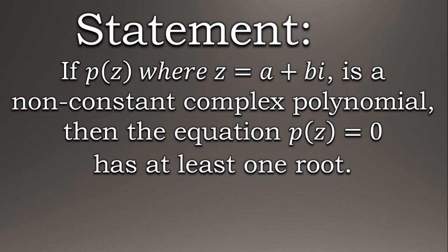Alright, so the fundamental theorem of algebra states that if we have a non-constant complex polynomial—what is a complex polynomial? Well, a complex polynomial means a polynomial with complex coefficients like this one in the example. So if we have a complex polynomial p(z) where z is a complex number, then the equation where we put the non-constant complex polynomial equal to zero has at least one root.